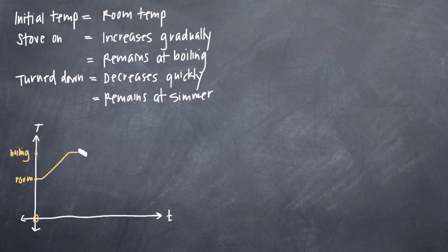At which point it remains fairly steady at boiling. It remains fairly steady for some period of time until eventually we turn the temperature down. So you can see that we started at room temperature, we've increased gradually, and now we have this plateau here at boiling.